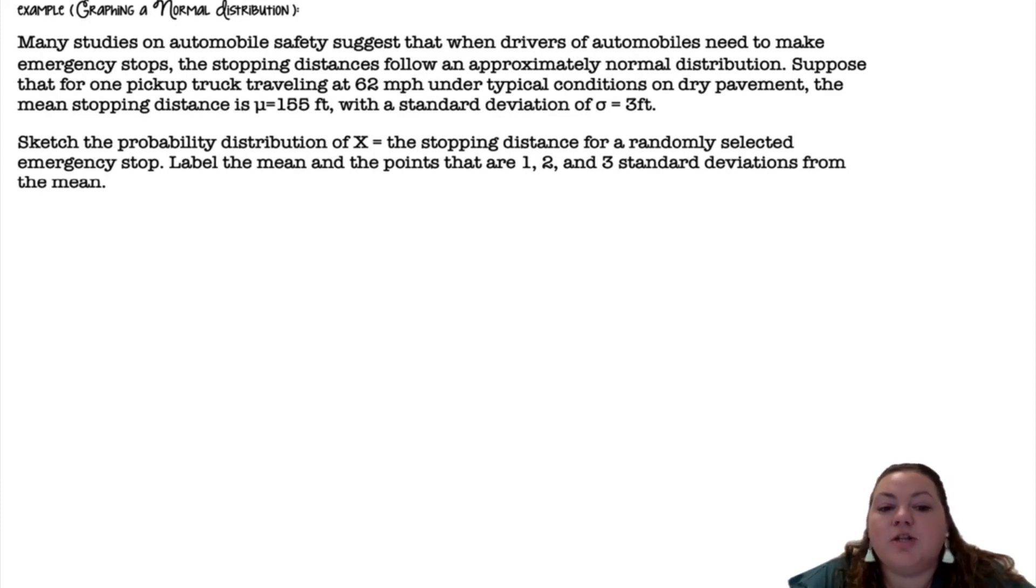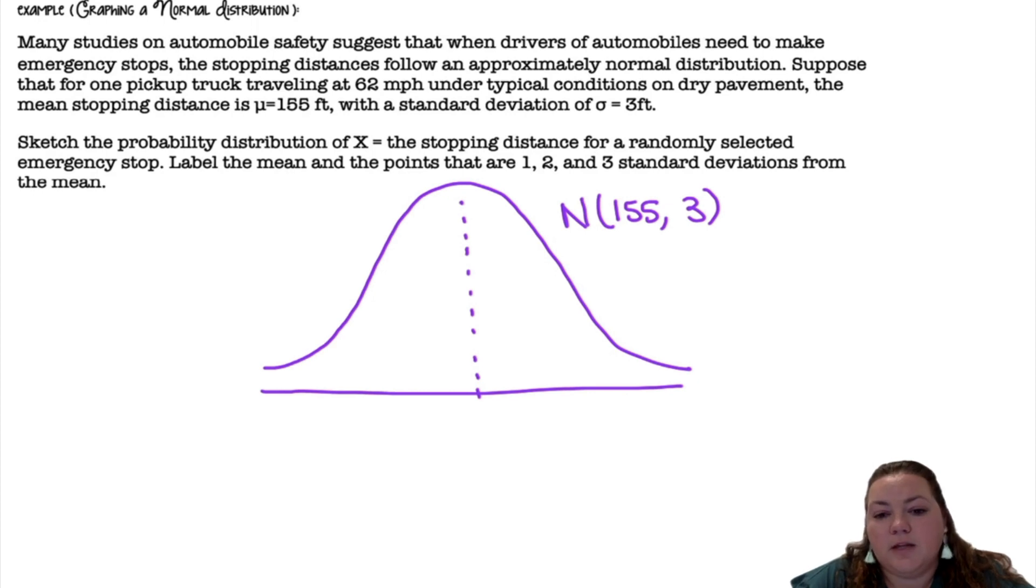Sketch the probability distribution of x, the stopping distance from a randomly selected emergency stop. Label the mean and the points that are one, two, and three standard deviations from the mean. So here's my normal distribution. I'm going to put a line down the center. This is a normal distribution with a mean of 155 and a standard deviation of 3. That's the notation we're going to put always when we draw them.